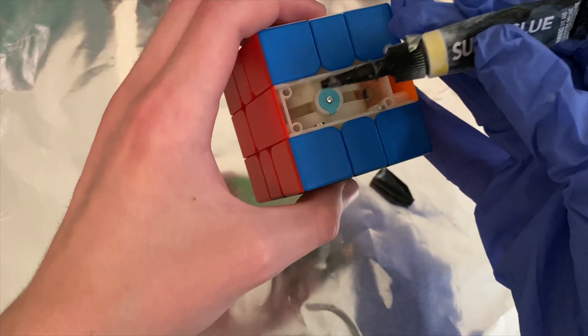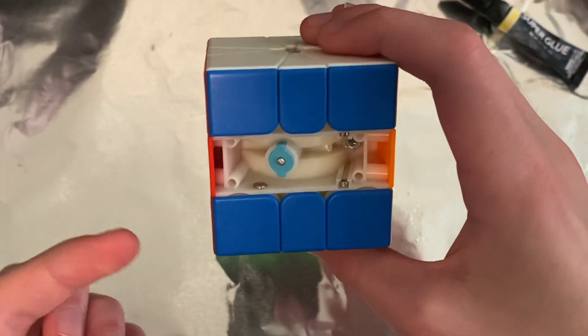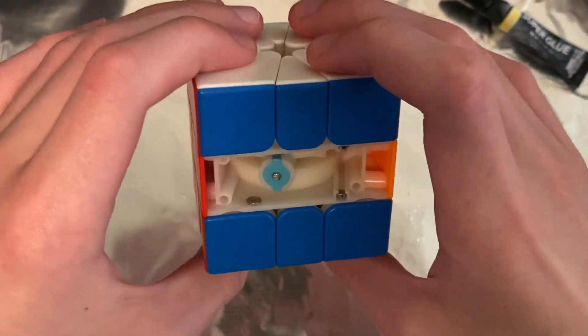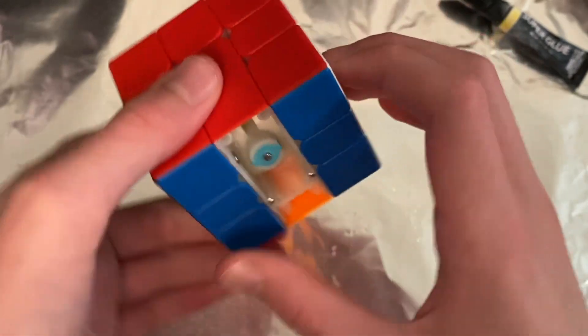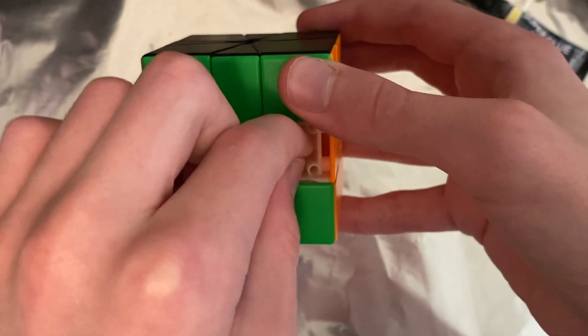And then same for the other side. They don't have to be completely dry, but as long as they're dry enough you can flip it over and then do the other side. It's the bottom, so just do the exact same thing as before.